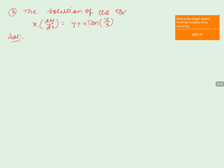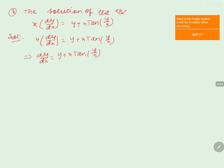The solution of the equation: x·(dy/dx) = y + x·tan(y/x). This can be rewritten as dy/dx = (y + x·tan(y/x)) / x. In the next step, we can write it as dy/dx = y/x + (x/x)·tan(y/x), which simplifies to dy/dx = y/x + tan(y/x).